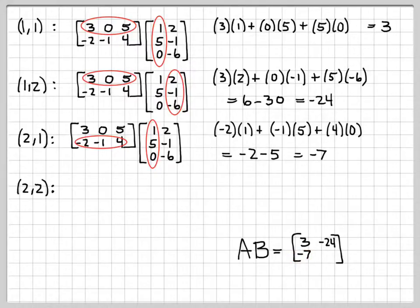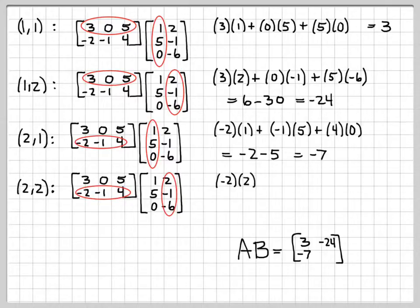And then what about the final entry, the second row, second column. I write down matrices A and B. I need to take the second row of A times the second column of B. And this is equal to a negative 2 times 2 plus a negative 1 times a negative 1 plus 4 times a negative 6. So that's a negative 4 plus 1 minus 24, which is a negative 27. So I can fill that in right there.